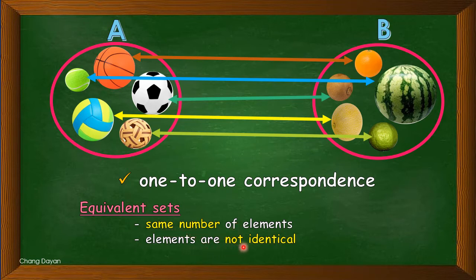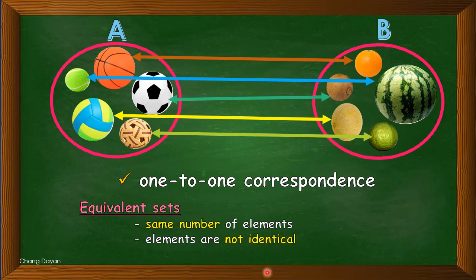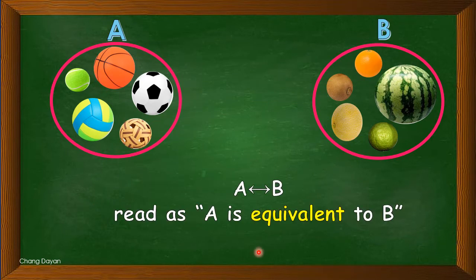Equivalent sets have the same number of elements, but the elements are not identical. As you see, there are one, two, three, four, five elements for set A, and one, two, three, four, five elements for set B. The elements are not identical — set A is a set of balls while set B is a set of fruits. So we use this symbol for equivalent: A is equivalent to B.